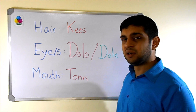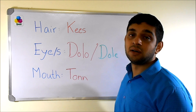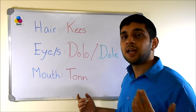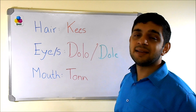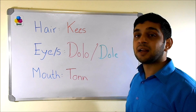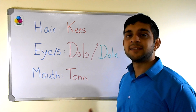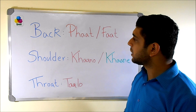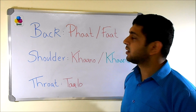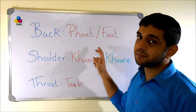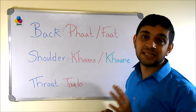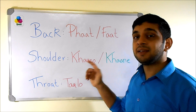Mouth is 'torn'. When I write 'nn', it is not the kitchen 'n' sound — it should be a softer 'n'. So: torn. To recap — hair is 'kiaans', eye is 'doro', eyes are 'dore', and mouth is 'torn'. Next is back — this means your upper back specifically, as we have a separate word for lower back. Upper back is 'fart'.